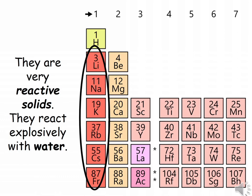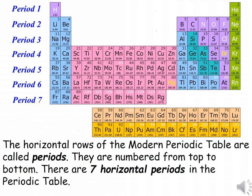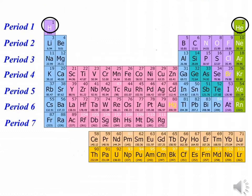The horizontal rows of the modern periodic table are called periods. They are numbered from top to bottom. There are seven horizontal periods in the periodic table. Some periods in the modern periodic table are longer than others. For example, period 1 contains only two elements, hydrogen and helium.